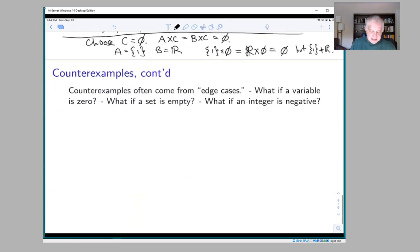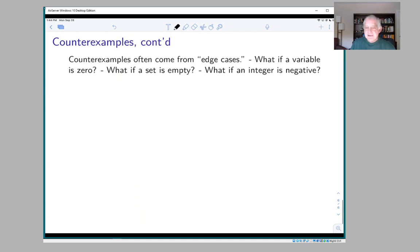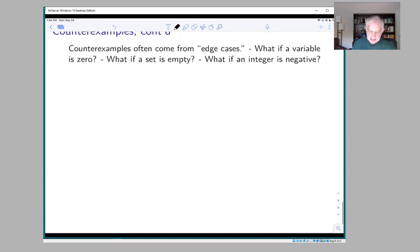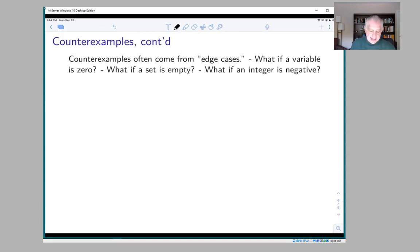What this particular example shows is that oftentimes counterexamples come from what you might think of as edge cases: like a variable being zero when you didn't think of it being zero, or a set being empty if you didn't think of it being empty, or an integer being negative if you didn't think of it being negative.